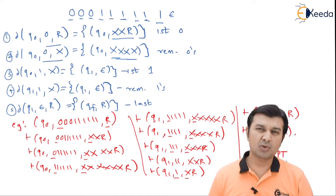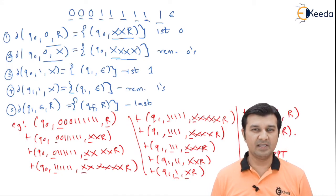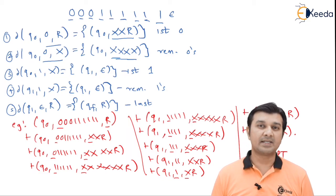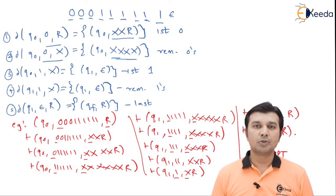That's how we solve this problem. Similarly, you can also consider an example which doesn't fall in the category and see that it is not going to be accepted by the pushdown automata. With this, we complete the problem. See you in the next problem. Thank you.